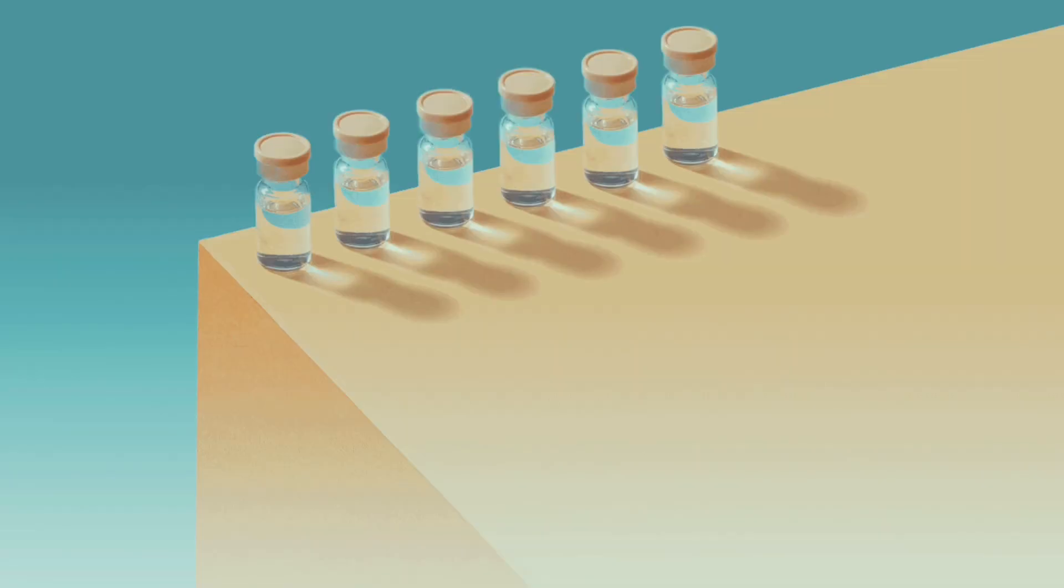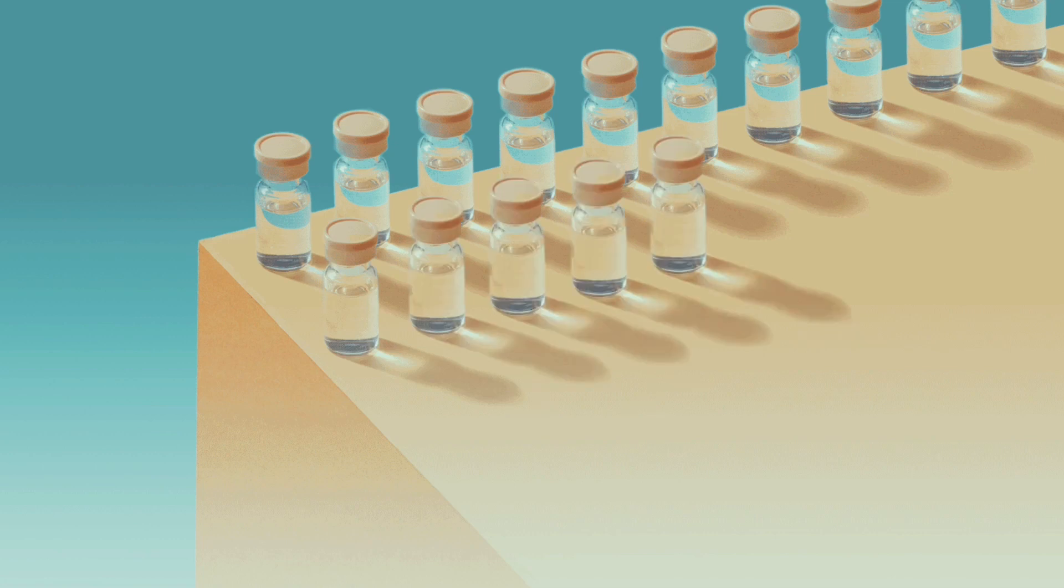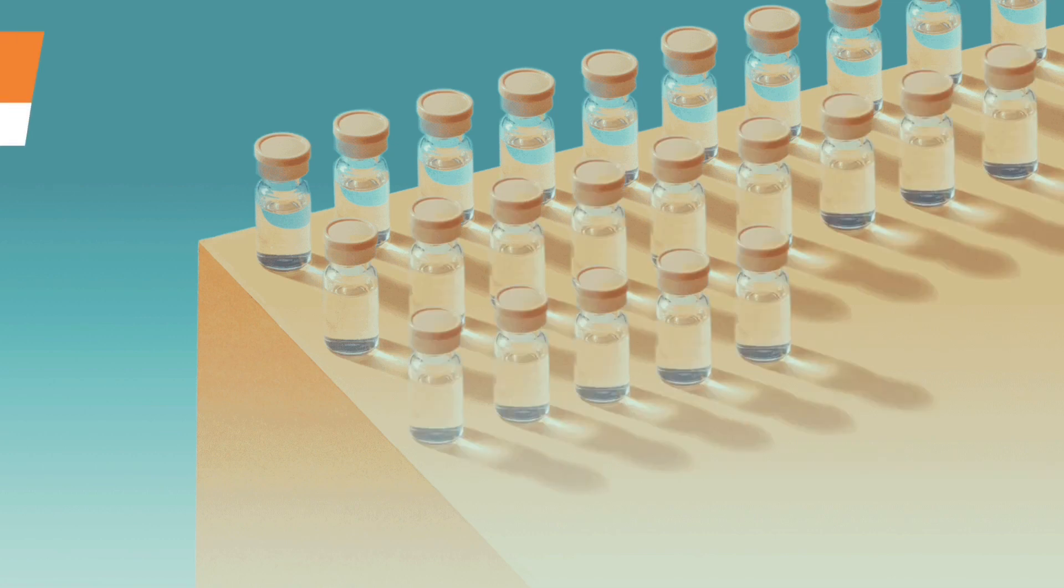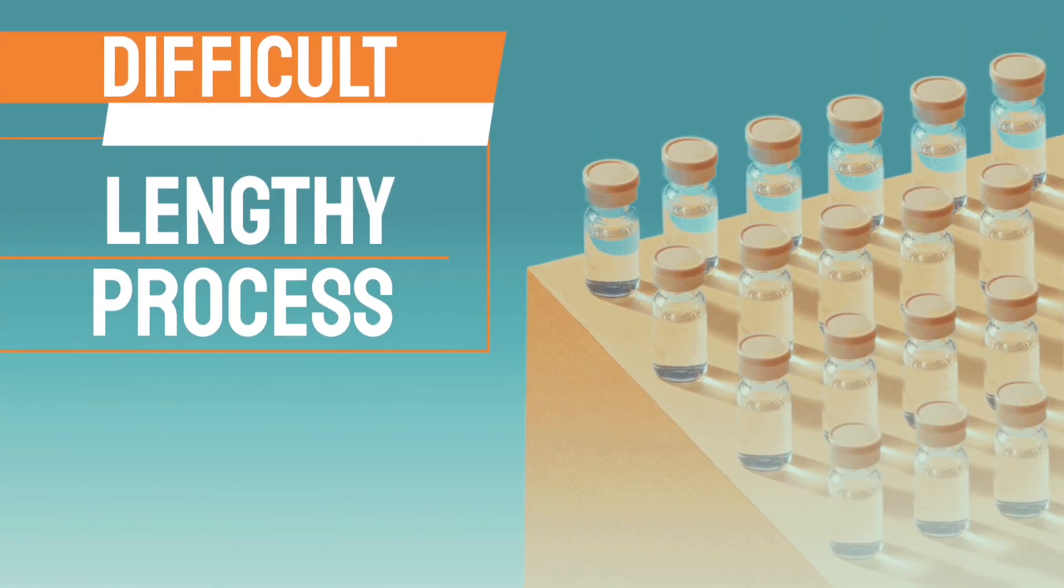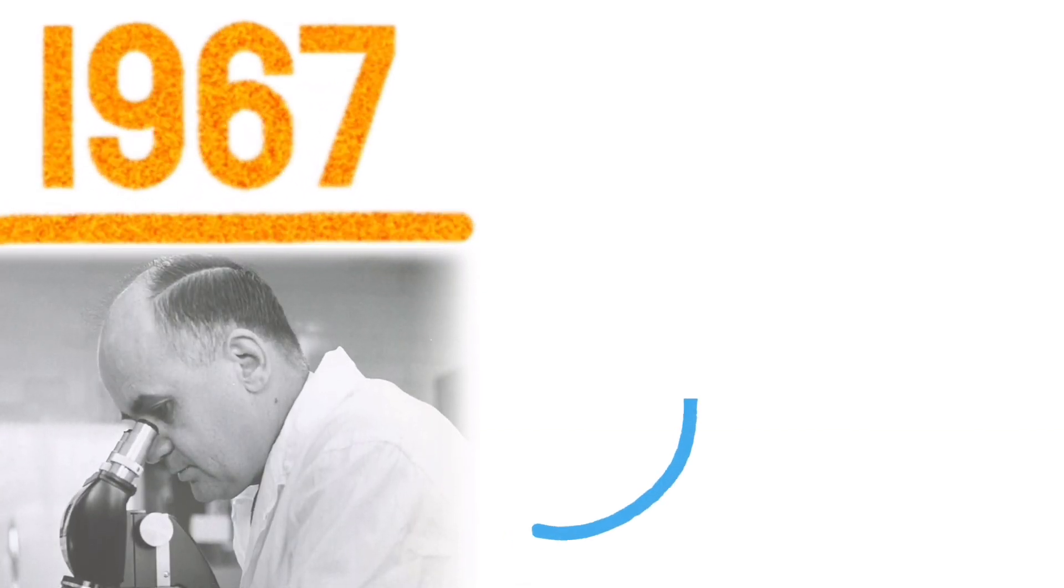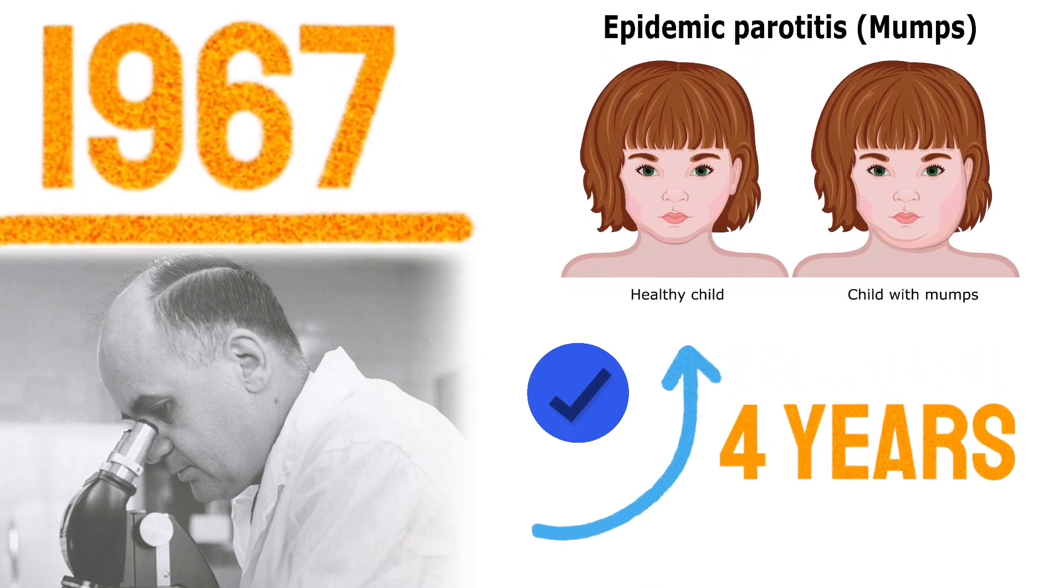Now, creating a vaccine in order to work against a virus that doesn't have any cure is somewhat difficult and a lengthy process. In 1967, Dr. Maurice Hillman's vaccine for mumps was approved after four years. This was the fastest vaccine that was ever developed in the history of mankind. Until now.